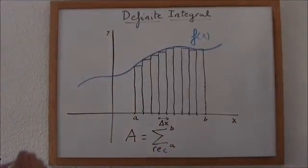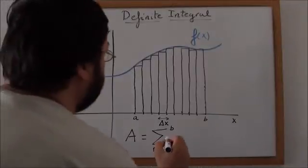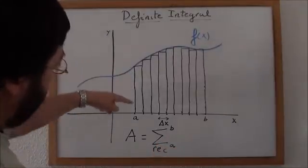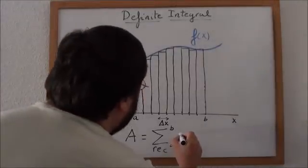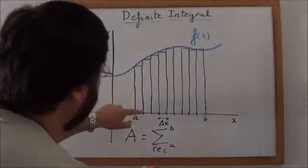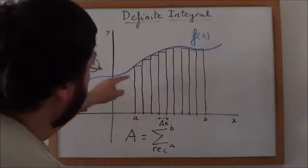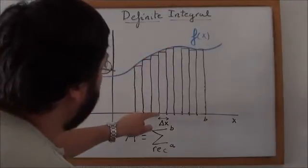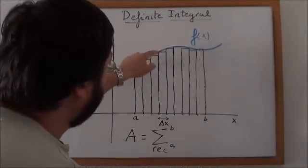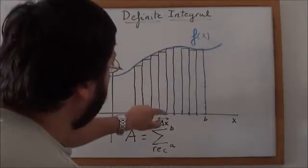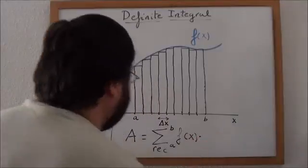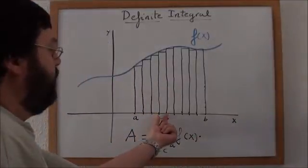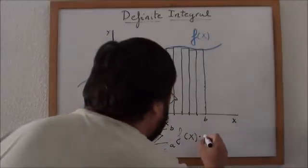And the area for each one of those rectangles is the height. The height would be f of x. f of x varies along the curve but f of x is the height for each rectangle times width, increment of x.